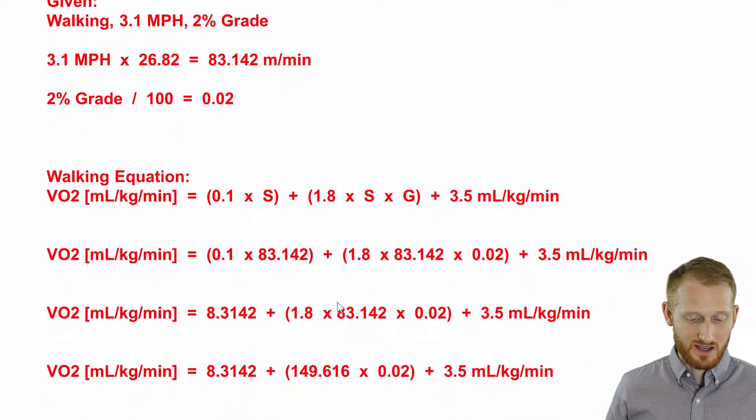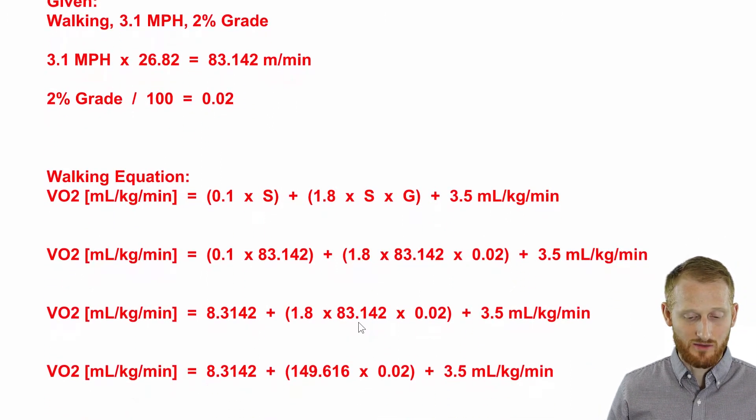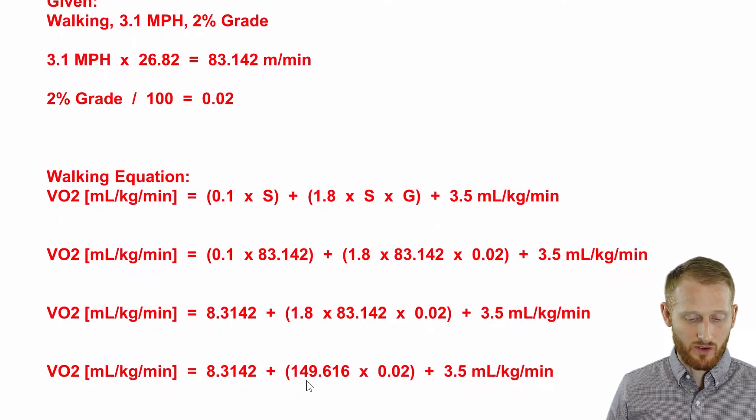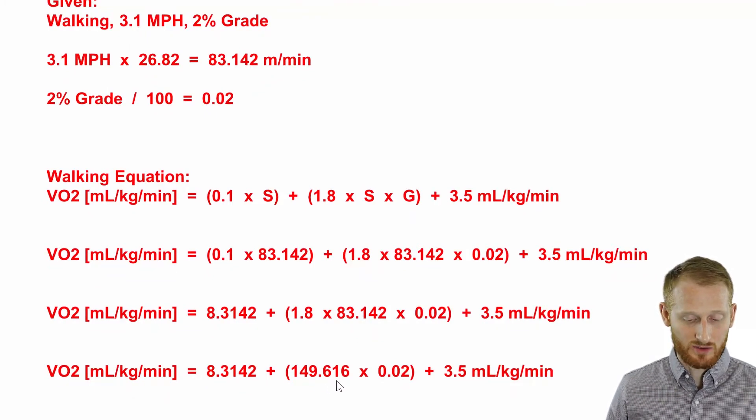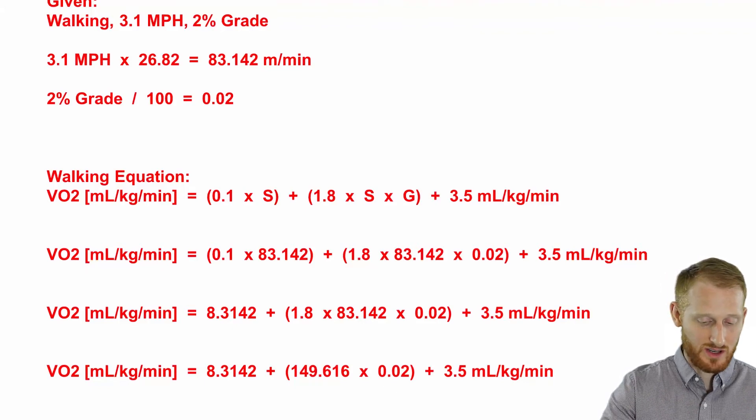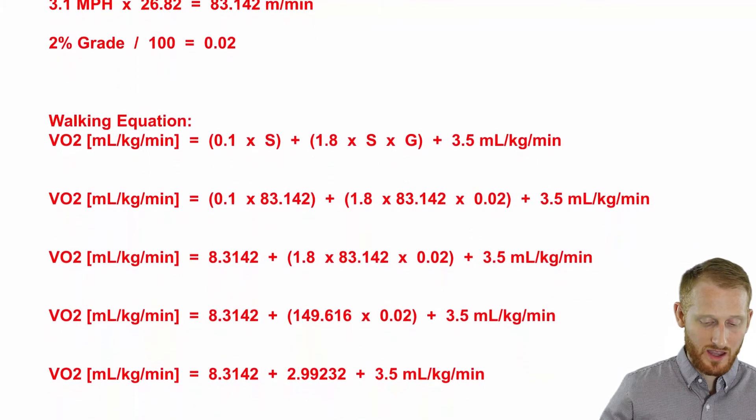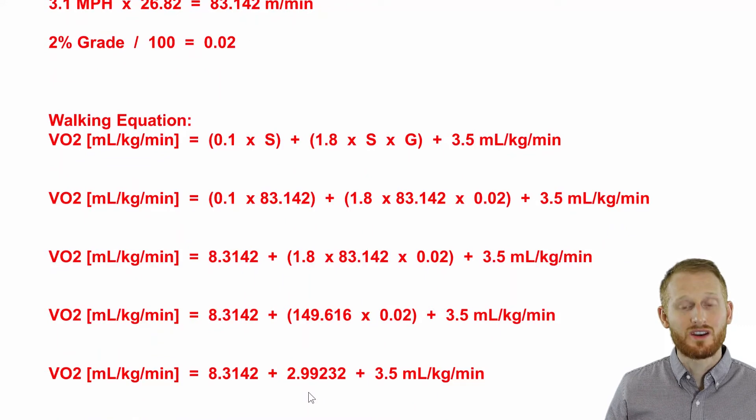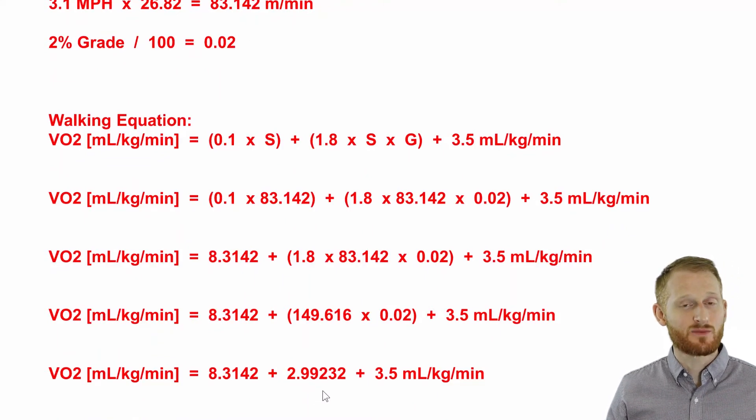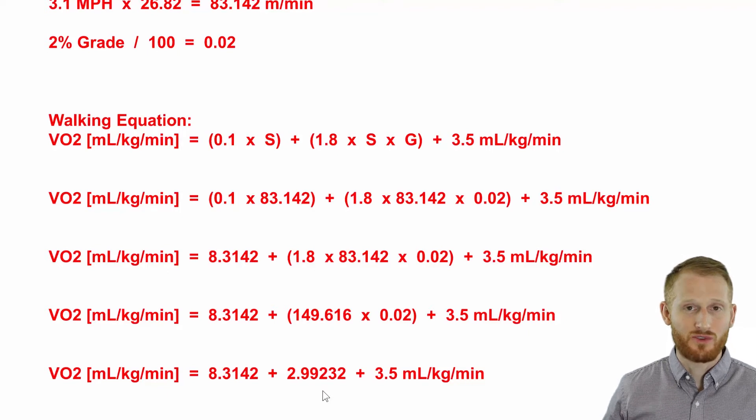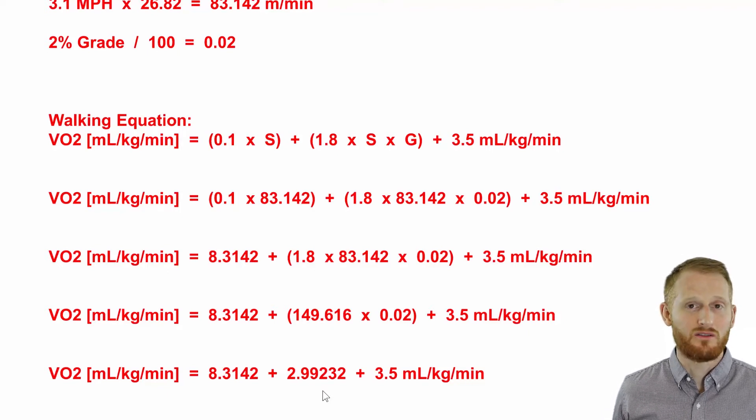Multiplying together 1.8 times 83.142, we end up with 149.616. Now we need to multiply that by 0.02 to get rid of that parenthesis altogether, and we end up with 2.99232. I'm keeping a lot of decimals here just so we don't have any rounding errors as we go. We can round at the very end.